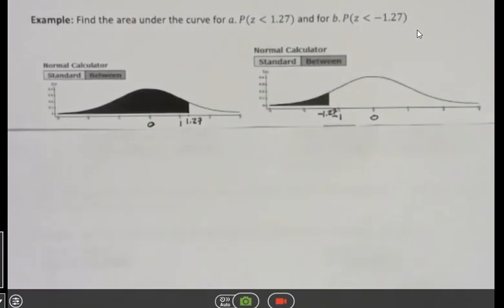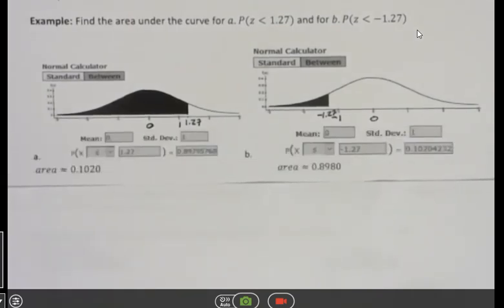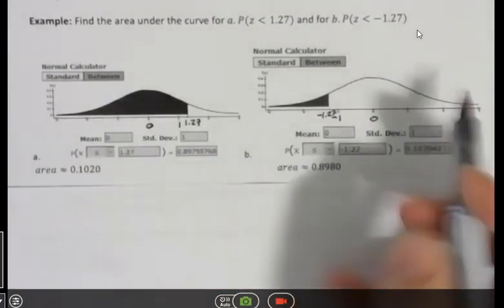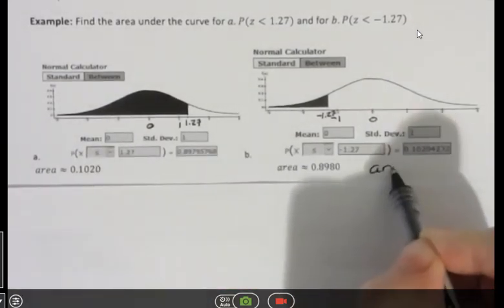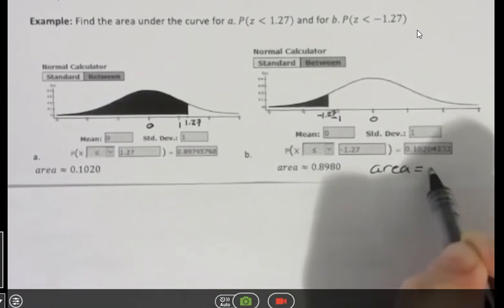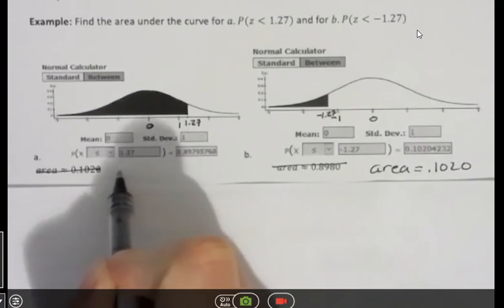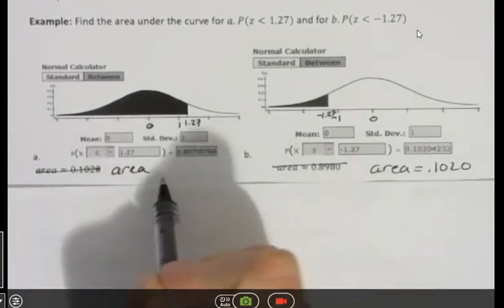And what you should be able to see here is that I get those two backwards. I put them in the wrong place. So this one, the area is 0.1020. And this one, the area is 0.8980.